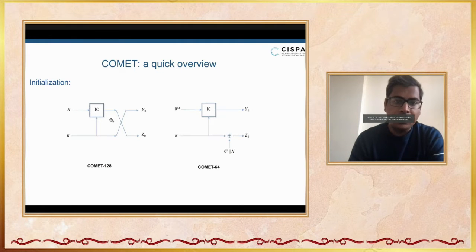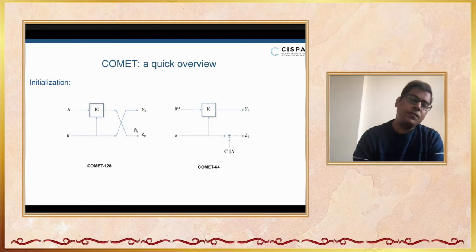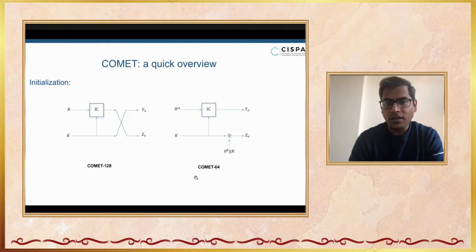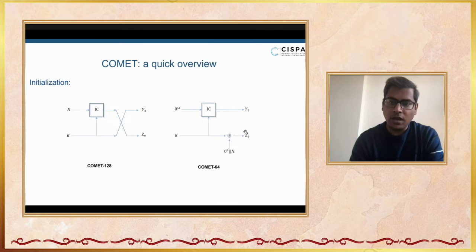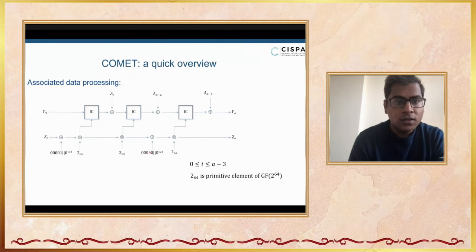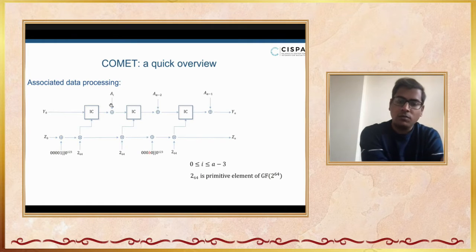In the case of Comet 128, we encrypt the nonce, and that value is called Z0, which is the initial block key. And Y0, which is simply the master key, is taken as the initial state. In the case of Comet 64, we encrypt 0 and that encrypted value is the initial state, and we simply mask the key K with the nonce to get the initial block key. After this, everything is performed in an iterated way. The first thing is associated data processing.